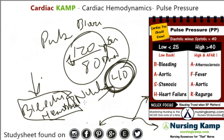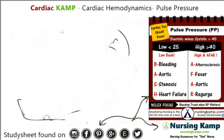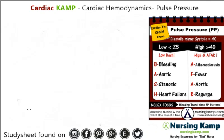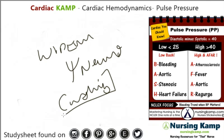An increased pulse pressure is greater than 40, and we see that a lot with neuro patients. That's called widening pulse pressure. In neuro patients, it's a sign called Cushing's Triad, which I'll cover in my neuro lectures.